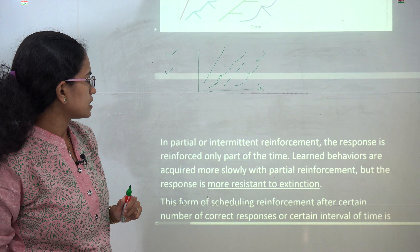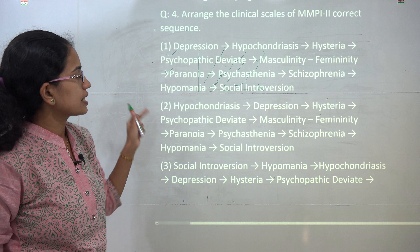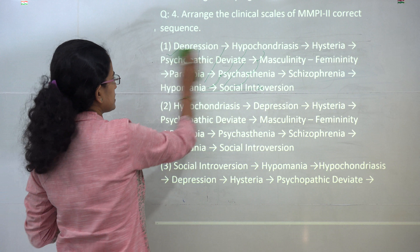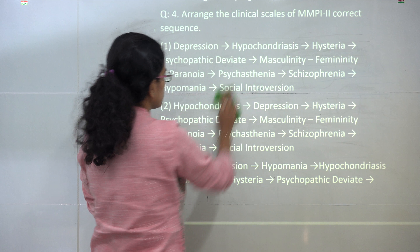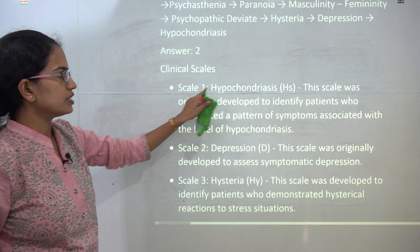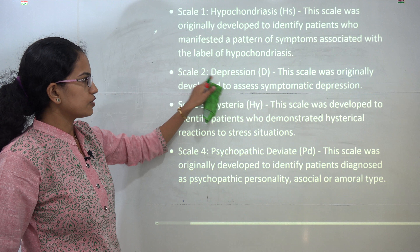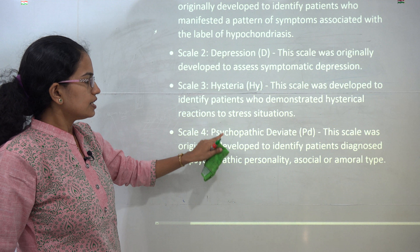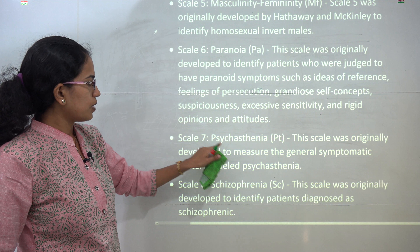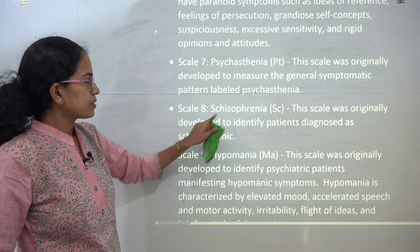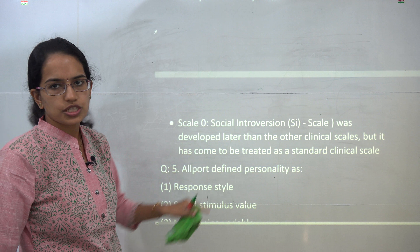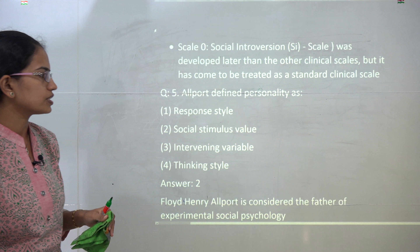The next question requires arranging the clinical scales of MMPI-2 in the correct sequence. The correct sequence is option 2. The scales are in the following order: hypochondriasis, depression, hysteria, psychopathic deviate, masculinity, femininity, paranoia, psychasthenia, schizophrenia, hypomania, and finally social introversion. That is the correct order for this scale.